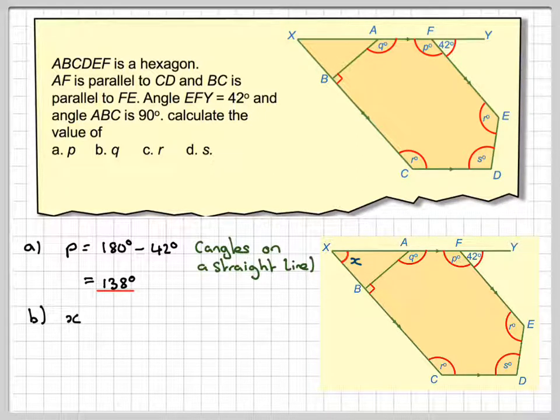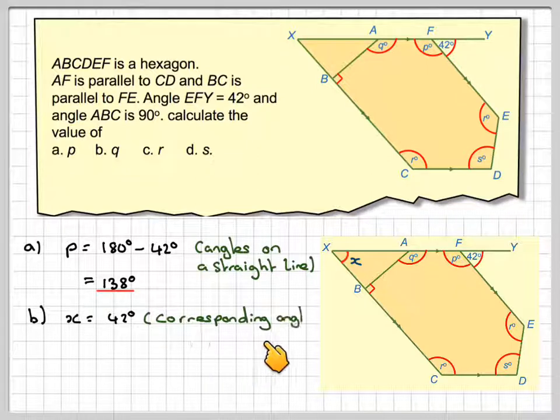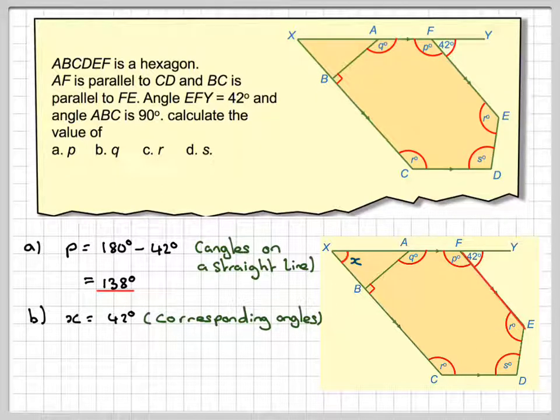In order to find Q, we need to find this angle X first. X is actually corresponding to this angle here because these two lines are parallel. So X is equal to 42 corresponding angles.